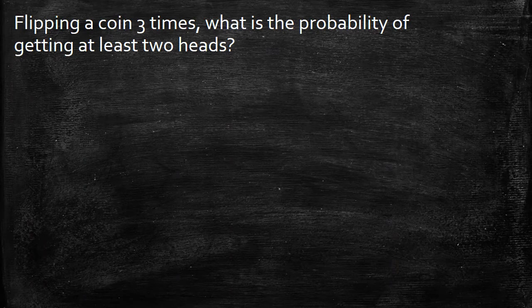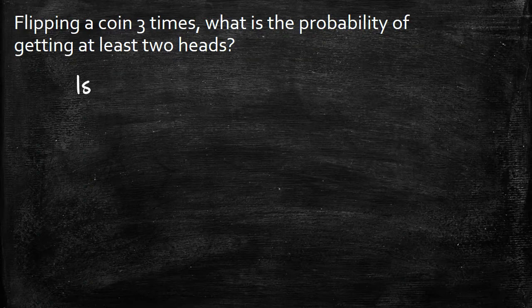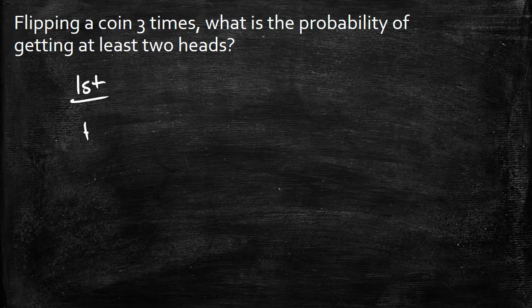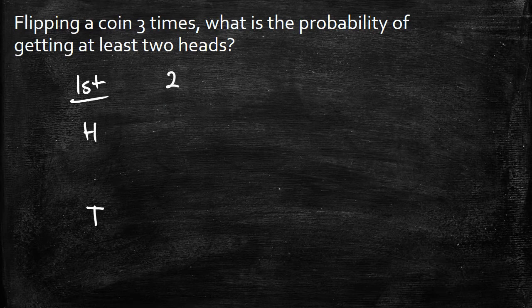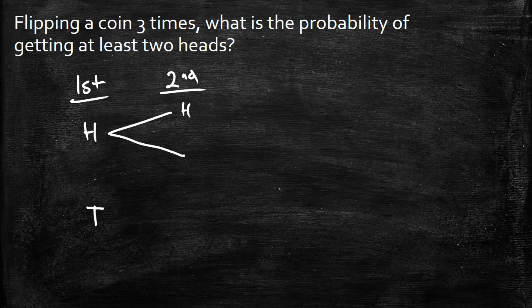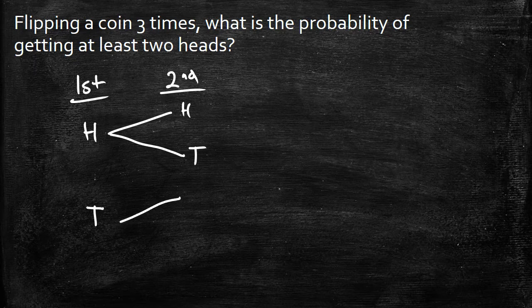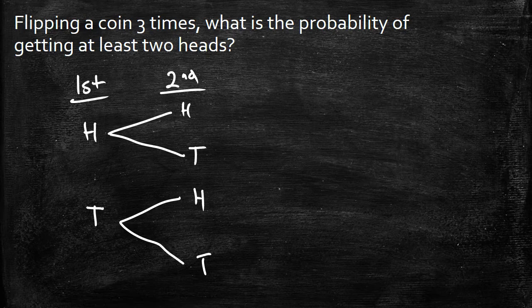So I know my possible outcomes for each flip. So I'm going to put first here, my first flip, you could get either a head, you could get a tails. From that flip, we could go to our second flip, and you could either get a head or a tail. And then also the same result here, because they are independent events. You get a head or a tail here.